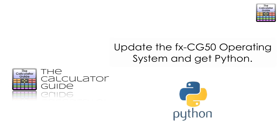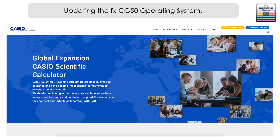Hello and welcome to the Calculator Guide video on how to update the operating system of the CG50. The new version of the operating system includes Python, so you can now get Python on your Casio CG50. I'm going to show you where to go and what you need to do to get that installed, and also there's a way to correct an error that some people were reporting when trying to update using the first method.